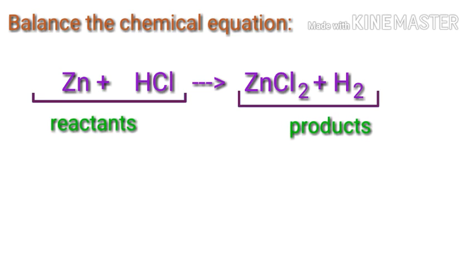In this equation, the reactants are zinc and hydrogen chloride, and the product is zinc chloride and hydrogen.